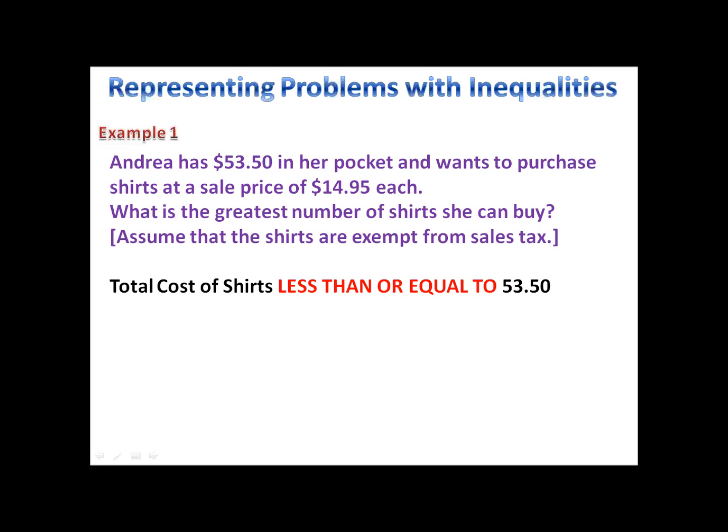Now, let's write our less than or equal to using a symbol. So the total cost of the shirts, less than or equal to $53.50. How do we figure the cost of the shirts? Well, the shirts are $14.95 each. And we figure out an amount by taking the amount per item and multiplying it by how many we have. For example, if we bought 100 shirts, we'd take $14.95 times 100. And that would tell us how much 100 shirts cost.